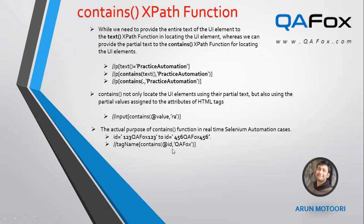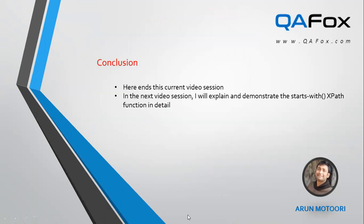I also demonstrated the real-time scenario where we use contains in our day-to-day Selenium process — where the value of some attribute keeps changing and only a few portions are constant. In such cases, we use contains with the constant text of that attribute value to locate those UI elements. In the next video session, I will explain the next XPath function, that is starts-with. So far I've explained text() and contains — starts-with is next. Thank you, bye!